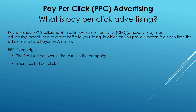After you select the products you'd like to run in the campaign, you'll select your max bid per click. As discussed, each time your item is clicked on you're paying a fee, and you have to bid for that fee. Your max bid per click tells Amazon how much you're willing to go up against another seller in an auction in order to get that buy box.